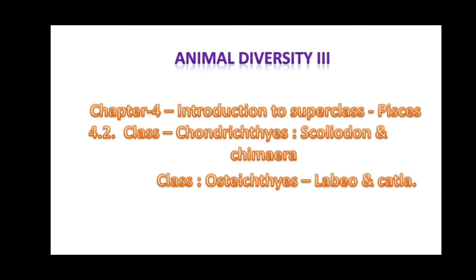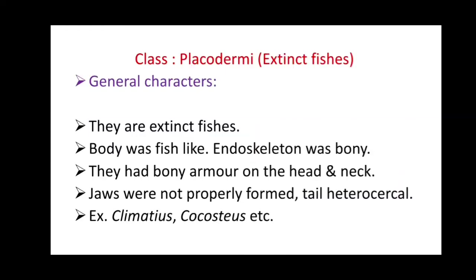Welcome to my YouTube channel. Today we are going to study Animal Diversity 3, Chapter 4 — introduction to subclass species, specifically 4.2 Class Chondrichthyes with examples Scolidon and Chimera, and Class Osteichthyes with example Labeo and Cutla. Sub-phylum Vertebrata is divided into two divisions: first is Agnatha and second is Gnathostomata. Gnathostomata is further divided into Superclass Pisces and Superclass Tetrapoda.